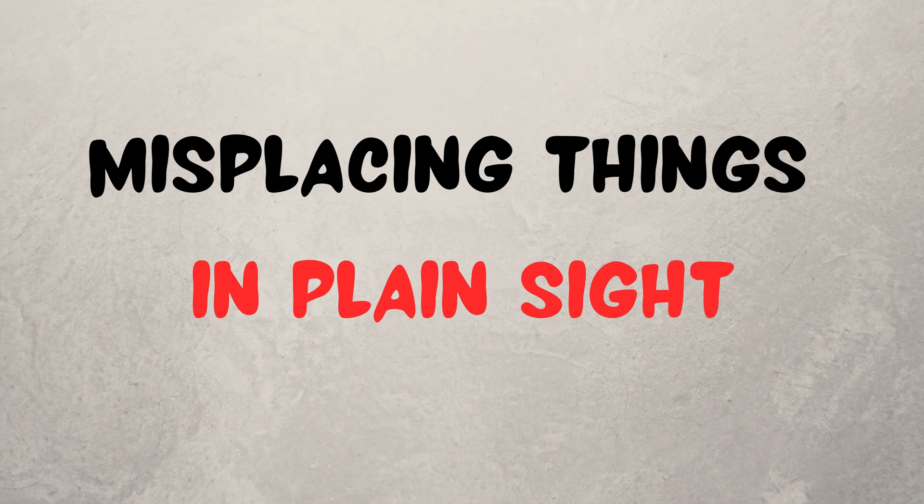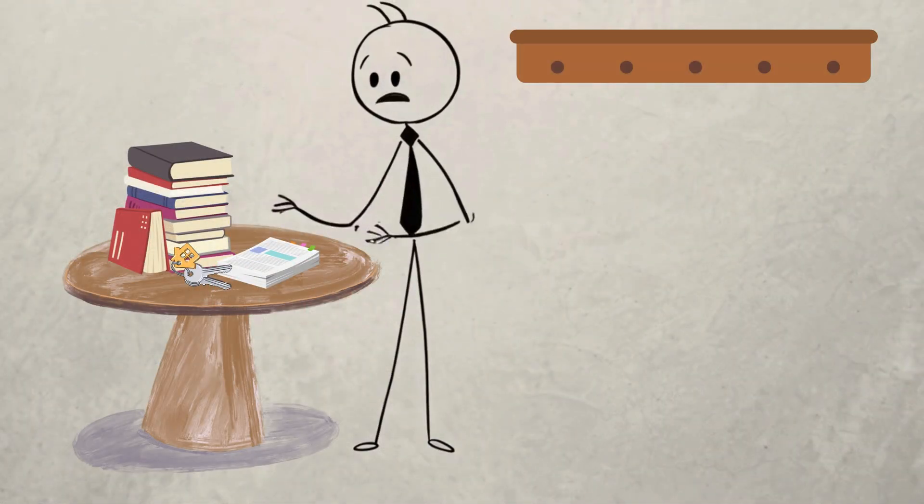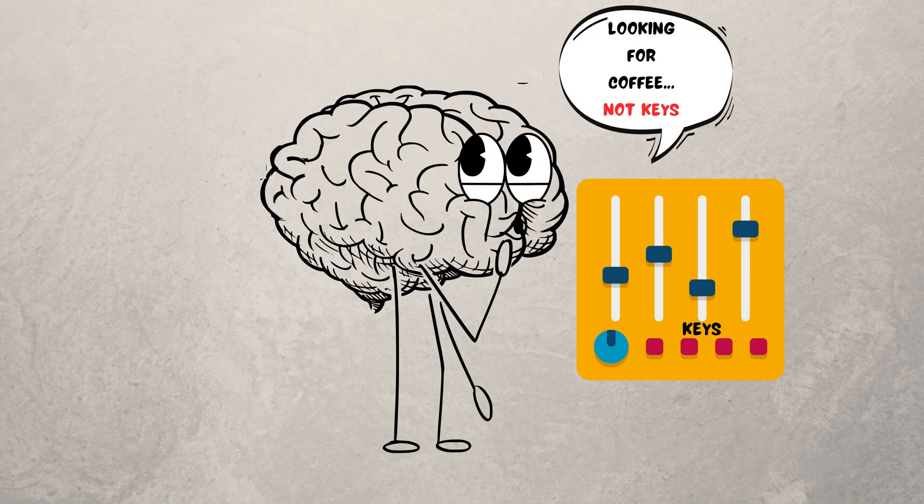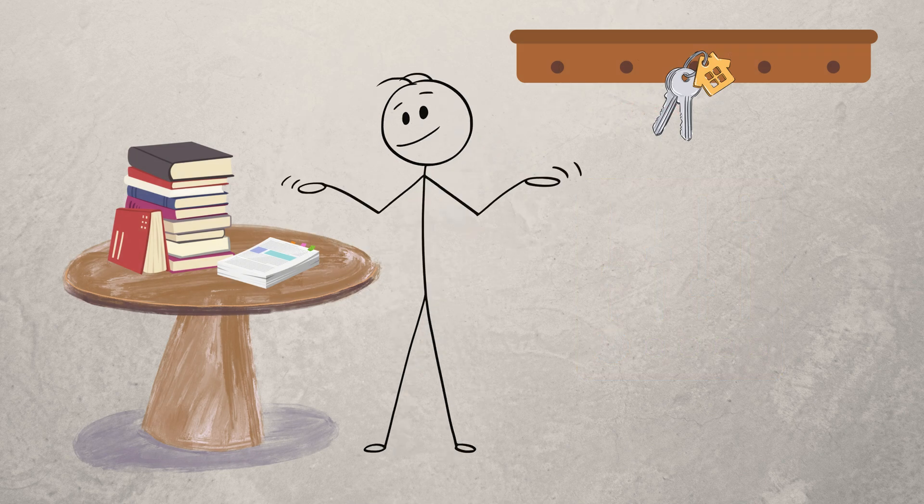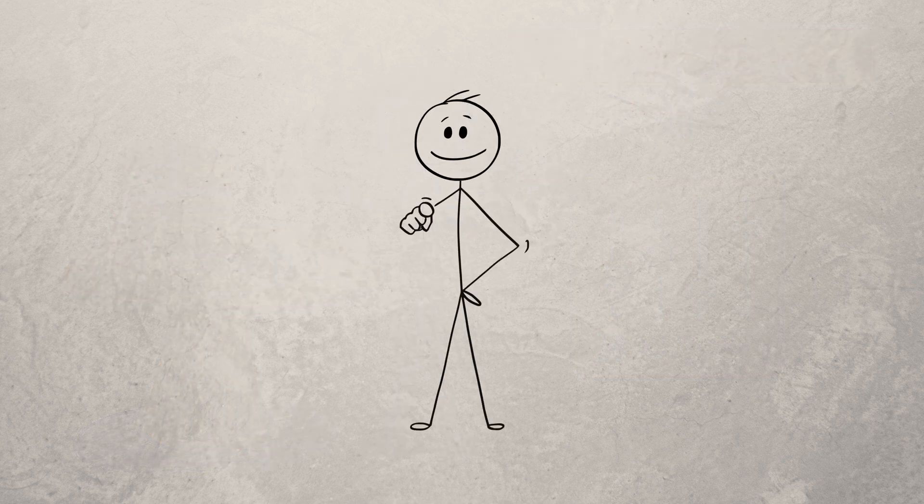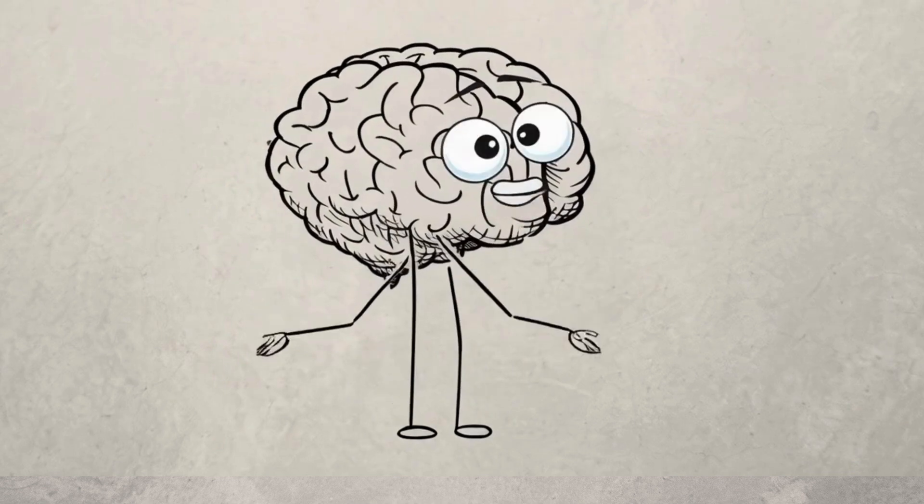Ten, misplacing things in plain sight. You swear your keys are gone but they're right there. Your brain filters out what it doesn't expect. So if the keys aren't in their usual spot, it literally ignores them. Your brain's like, never seen those keys in my life.